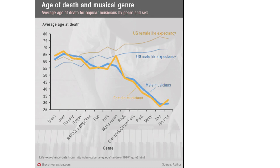What this graph shows is the age of death for female musicians in yellow, male in blue, and so forth. For blues, jazz, and country musicians, they're living a sort of normal lifespan, dying in their 60s and 70s. But as we move toward more modern genres, punk musicians are dying really young — 35, 40. It's even worse for metal. And rap and hip-hop is terrible: these musicians are dying at like 30 or 35 years of age. At least that's what this graph seems to be showing.